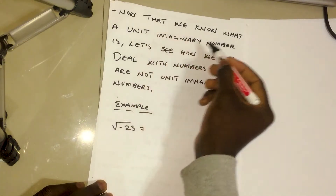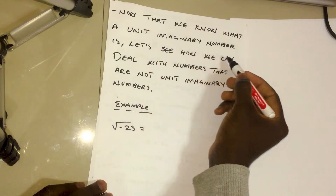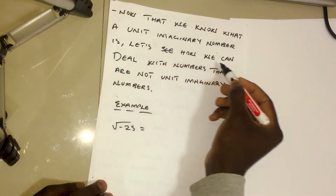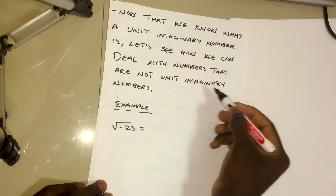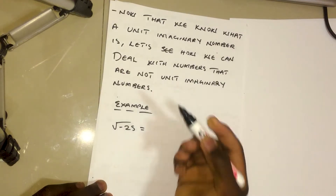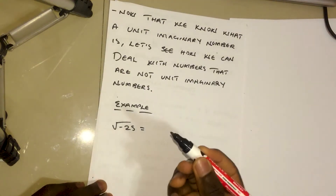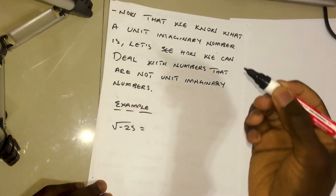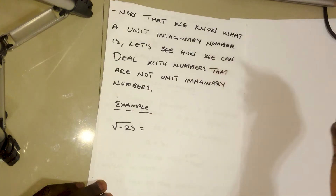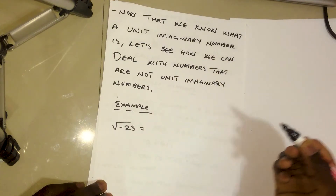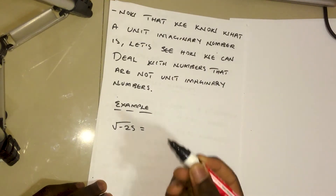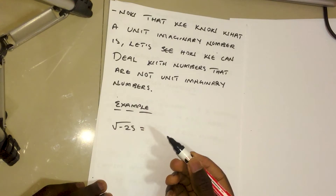Now that we know what a unit imaginary number is, let's see how we can deal with numbers that are not unit imaginary numbers. We know that a unit imaginary number is simply the letter i, which equals the square root of negative 1. But how about numbers that are not unit imaginary?